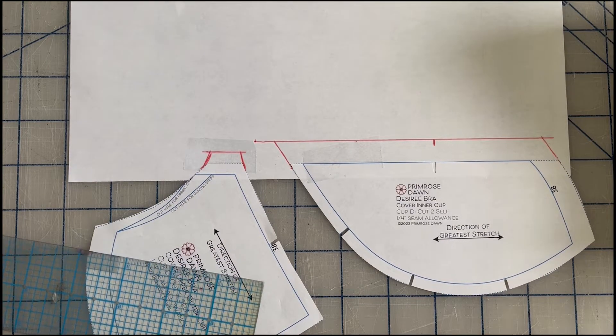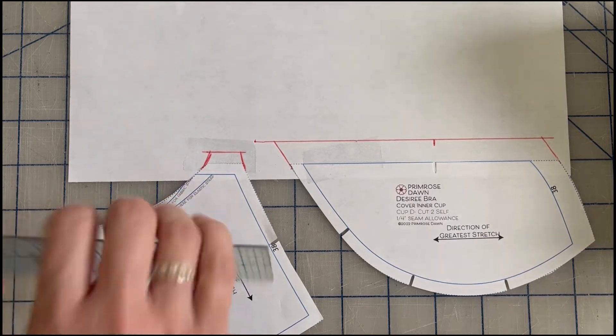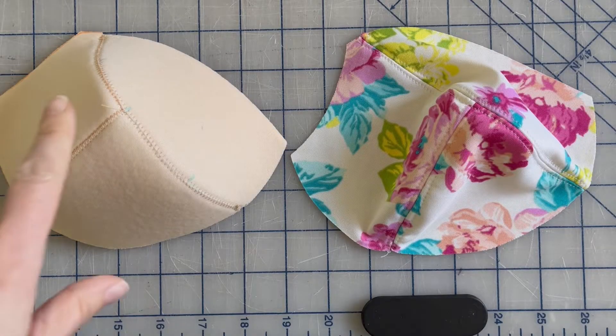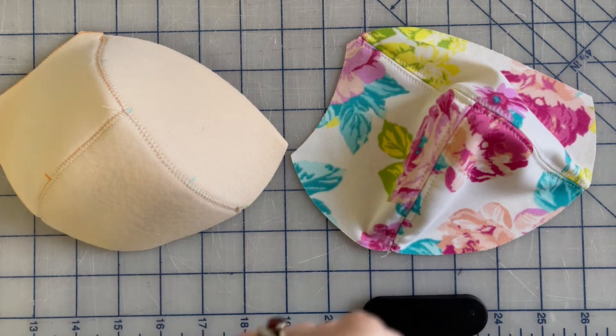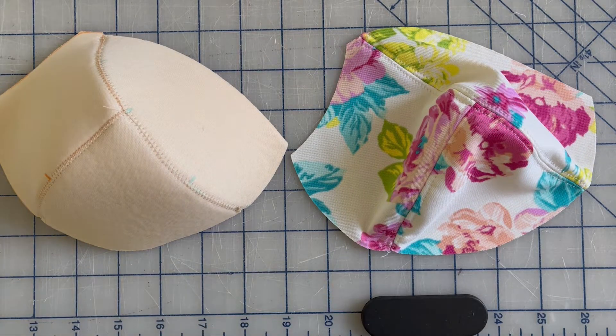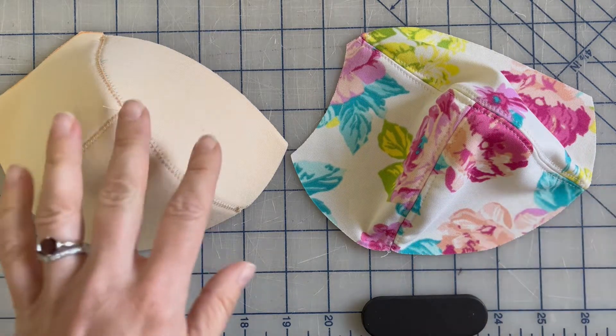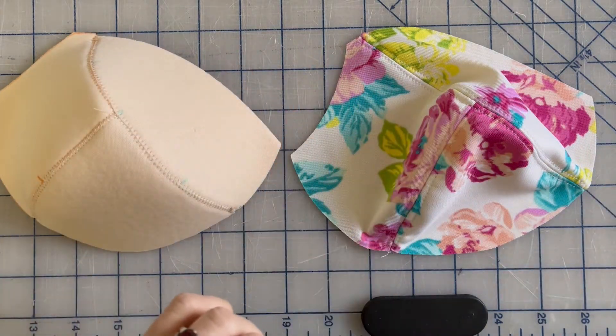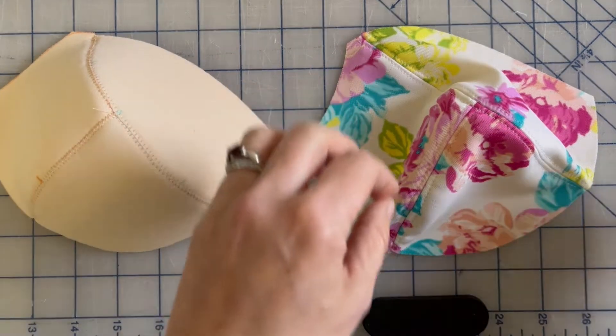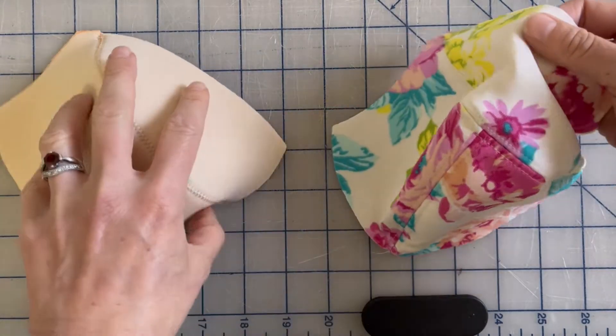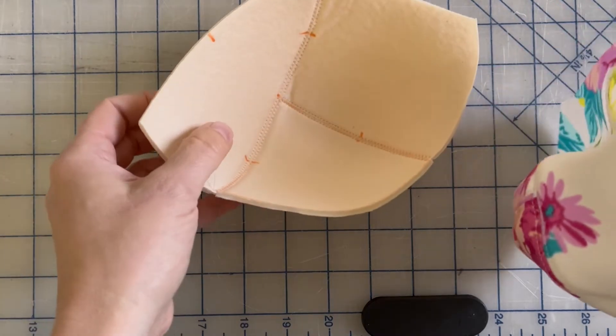That's it for the pattern changes, so cut out your new pieces and then we'll get to sewing. I have constructed my foam cup and the cover according to the directions in the pattern, but how we put them together is going to be a little different for our rolled edge. These are both the right sides of this cup, and to put it together we're going to put the right side of the cover towards the wrong side of the foam cup.